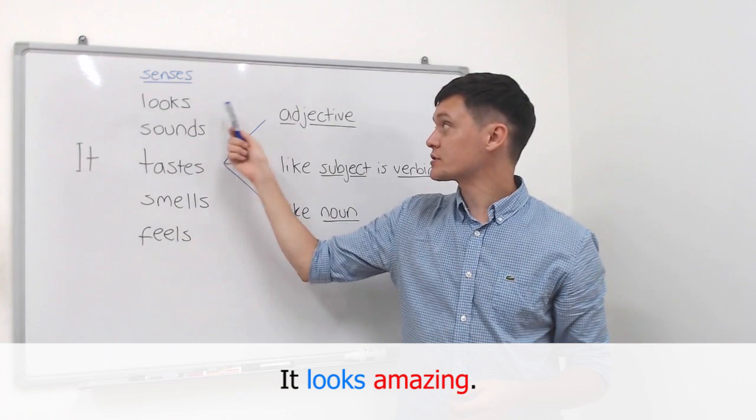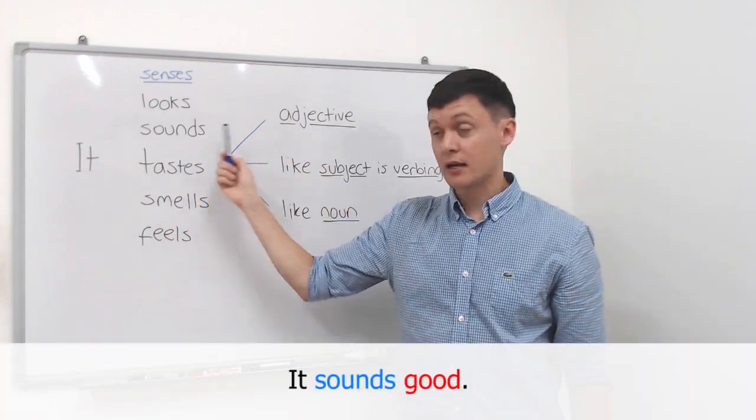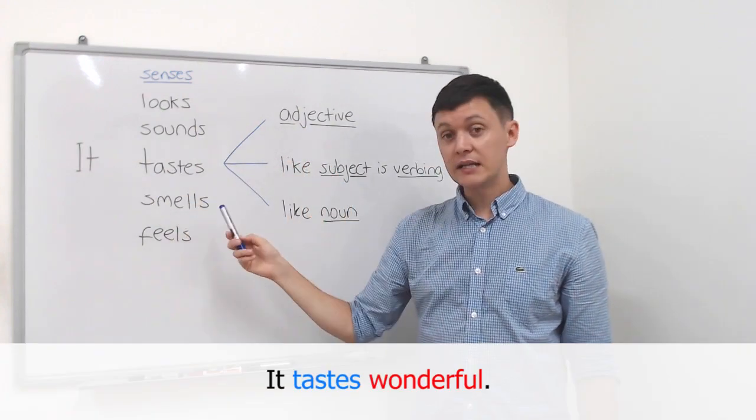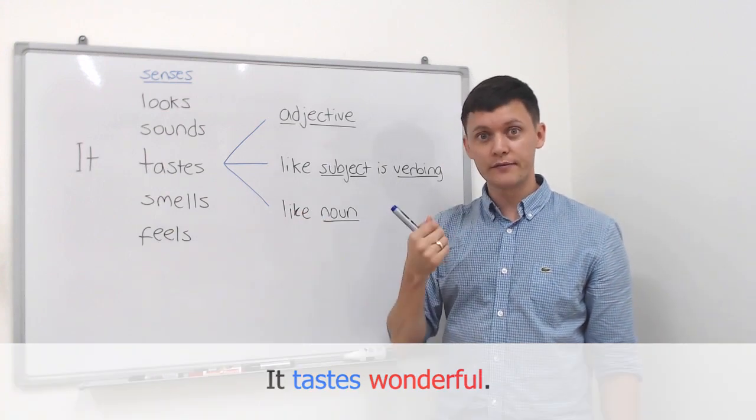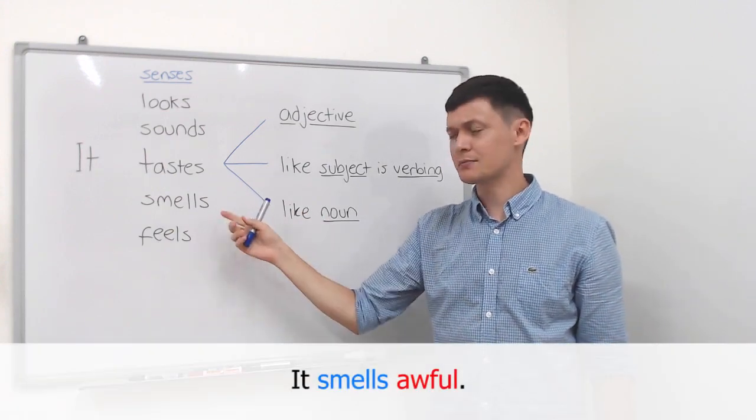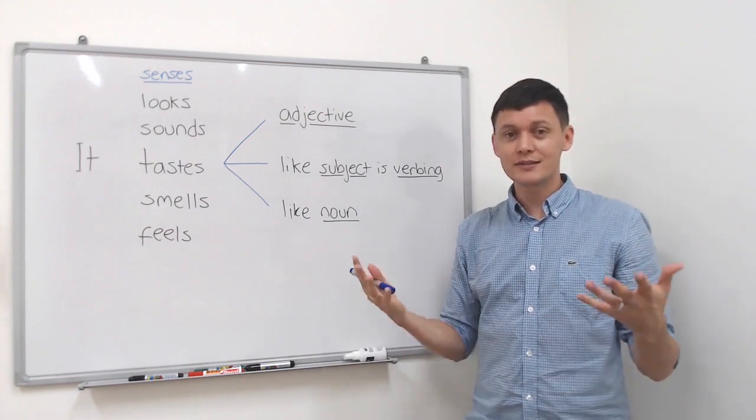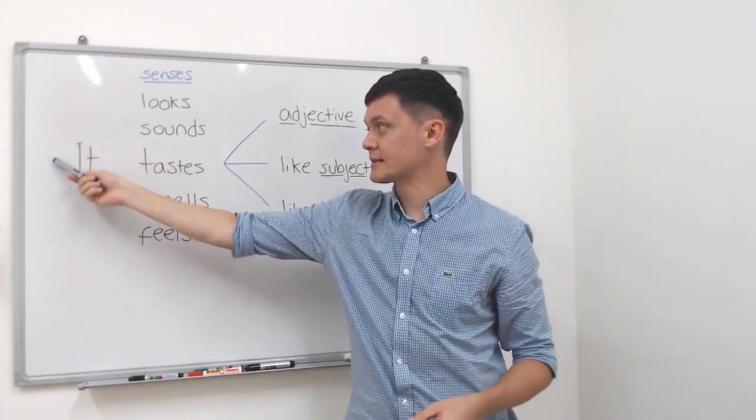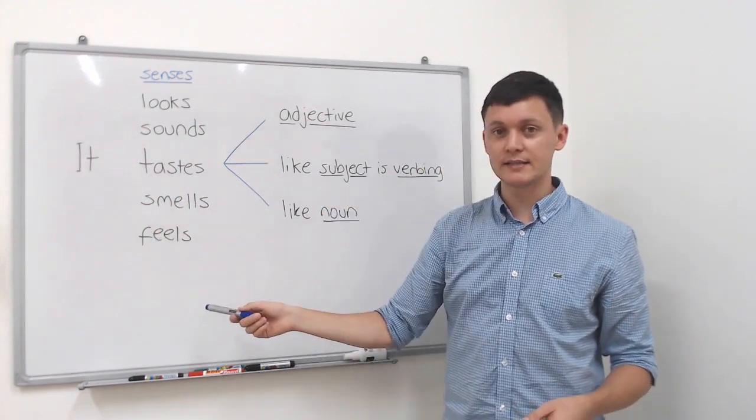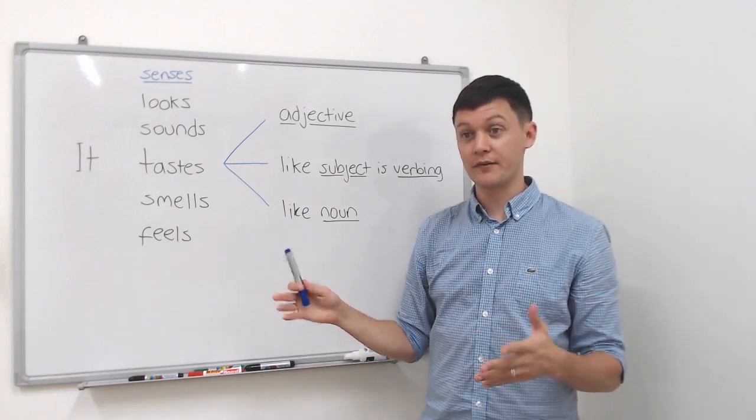So for example, it looks amazing. It sounds good. It tastes wonderful. It tastes delicious. It smells awful. So it's just a simple case of using 'it', one of these senses and an adjective. Very easy.